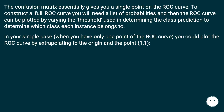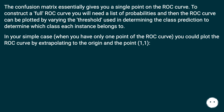The confusion matrix essentially gives you a single point on the ROC curve. To construct a full ROC curve you will need a list of probabilities, and then the ROC curve can be plotted by varying the threshold used in determining the class prediction to determine which class each instance belongs to. In your simple case, when you have only one point of the ROC curve, you could plot the ROC curve by extrapolating to the origin and the point 1, 1.